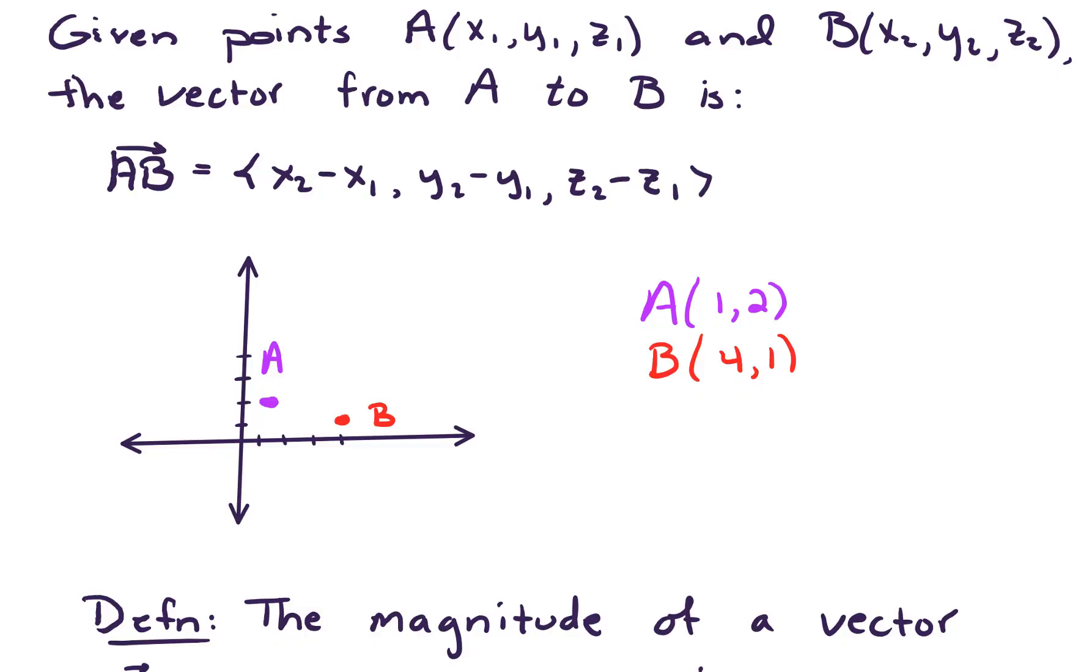So now let's consider two points, A and B. Point A is given by the x, y, z coordinates x1, y1, z1, and B is given by the coordinates x2, y2, and z2. The vector from A to B is given by the following. It's the vector with components: first component x2 minus x1, second component y2 minus y1, and third component z2 minus z1. So let's take a look at an example.